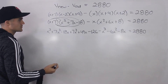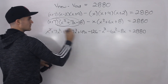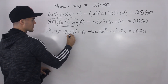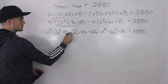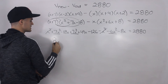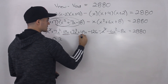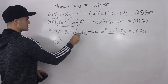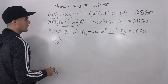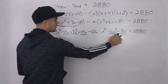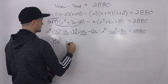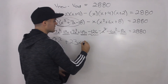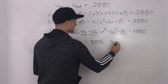After expanding, we collect like terms. The x cubed terms cancel out — x cubed minus x cubed equals zero. For x squared: 7x squared plus 7x squared minus 6x squared equals 8x squared. For x terms: negative 18x plus 49x minus 8x equals 23x. Combining the constants gives negative 126, and bringing 2,880 to the left gives us: 8x squared plus 23x minus 3006 equals zero.